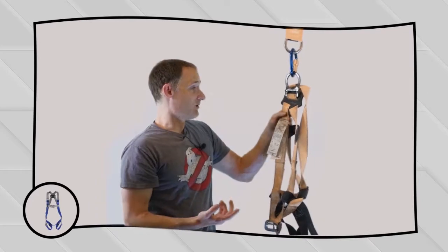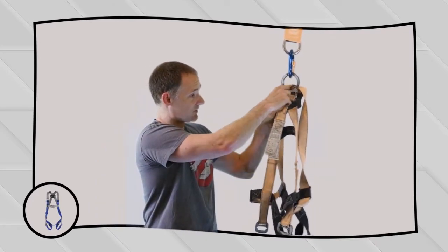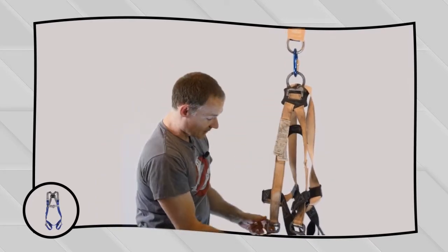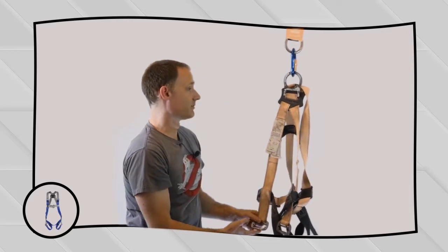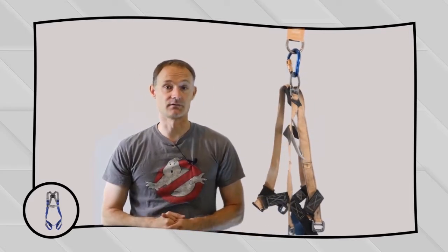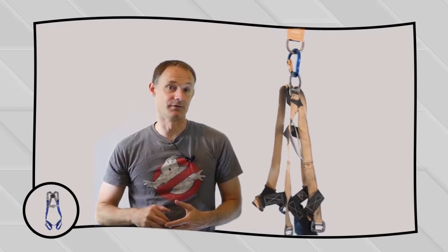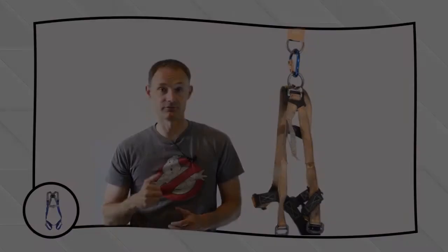And also just checking the actual hardware components themselves. If the back D-ring is stretched or out of round or any of the buckles have been bent or pulled out of shape, that's another example of a harness being impact loaded. If there's any sign at all that your harness has been involved in a fall, you have to remove it from service.